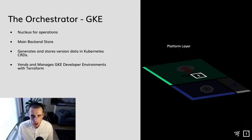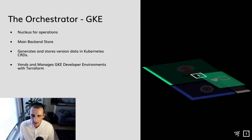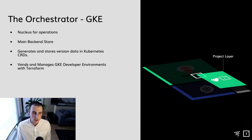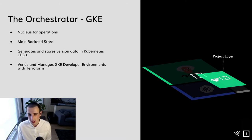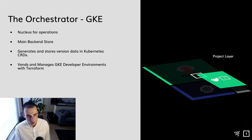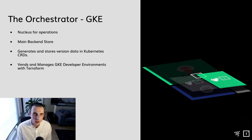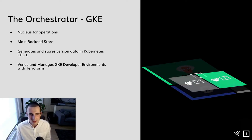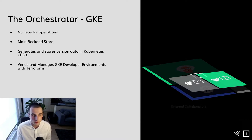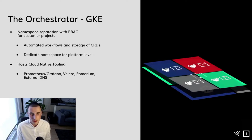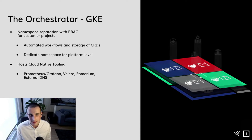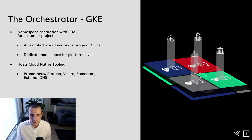We also achieved the ability to vend and manage GKE development environments. The development environments that Improbable developers test their code against are generated in GKE using Terraform. We have namespace separation with RBAC for our customer projects — a very powerful tool leveraging Kubernetes, giving exactly the sandbox we needed from project to project to store confidential secrets, config maps, and the generation of Google Cloud objects inside those sandbox namespaces for each project.